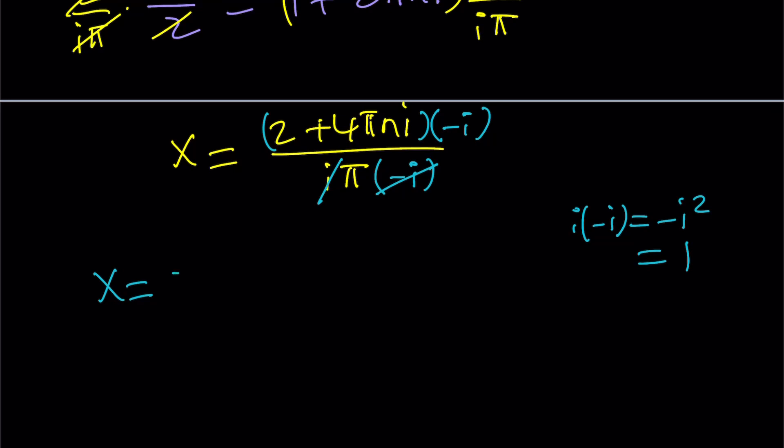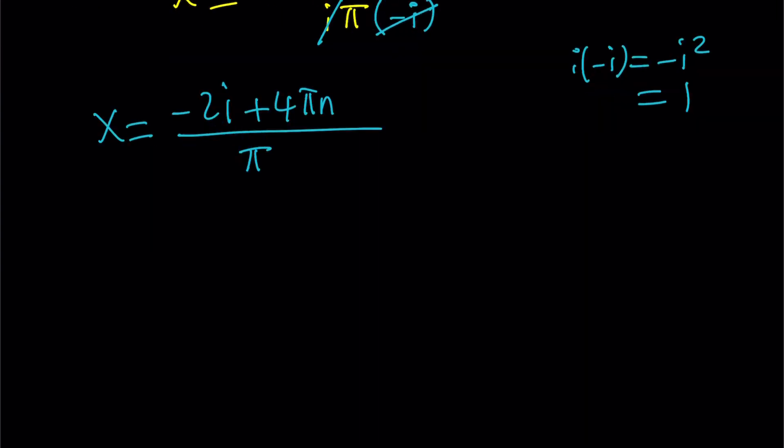So now we're going to distribute to negative i. When you distribute, you're going to get negative 2i. And this i and this negative i are going to be multiplied again to make 1. So we're going to get plus 4 pi n. And then, obviously, that's going to be divided by pi. And that should be the answer in the, I don't know, whatever form you want it to be. But, of course, if you want to write this as a, I don't know, write the real part first. You can also write it like this. And that will do the trick. Okay? So that is the x value.